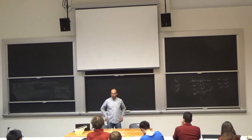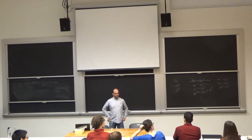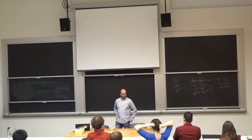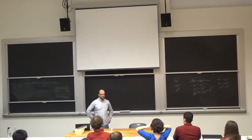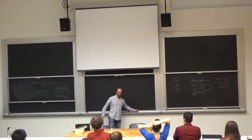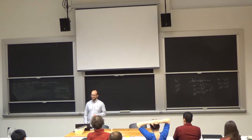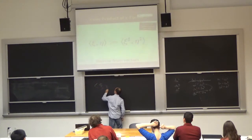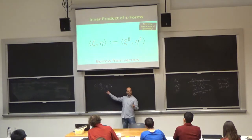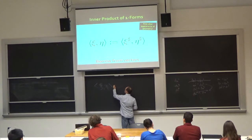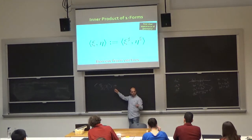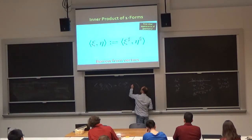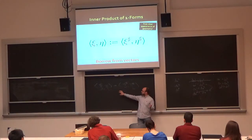A one-form is just a fancy way of encoding a vector — specifically, encoding a dot product with a vector. So if we take dot products of one-forms, we should agree with dot products of vectors. We have a way to go from one-forms to vectors: the sharp operator. So if I have one-forms xi and nu and want their inner product, I define it by converting them to vectors via sharp and taking the dot product. The dot product of zero-forms is just multiplication.